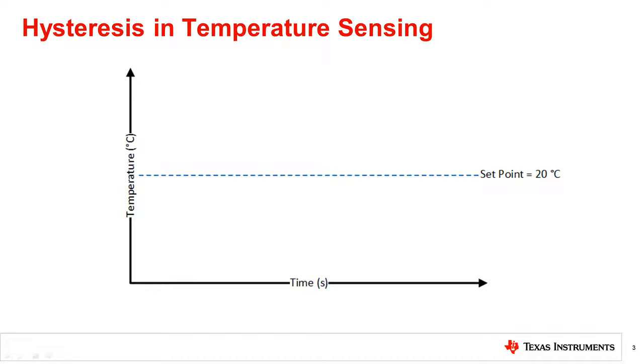This is a very common application for temperature switches. As shown in the graph, there is a set point of 20 degrees Celsius and no hysteresis. When the temperature is below the set point, the heater switches on. And when it goes above the set point, the heater switches off.